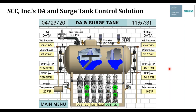Let's talk about our DA and surge tank control solutions at SCC. We've been developing these products for a number of years and have quite a few installed in the field. This is a typical overview screen of our DA control panel — in this case a dual tank with a DA and a surge tank in one enclosure, with a pressure vessel partition between the two. We have two transfer pumps feeding the deaerator section and feed water pumps pumping to the boilers, both with high, low, and low-low level controls. In this example we're controlling feed water pressure to 155 psi and transfer pump pressure to 45 psi.